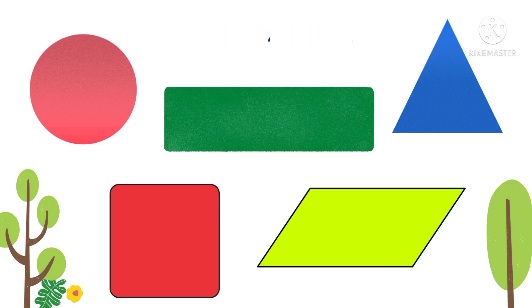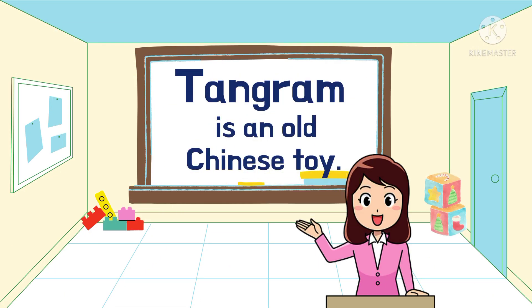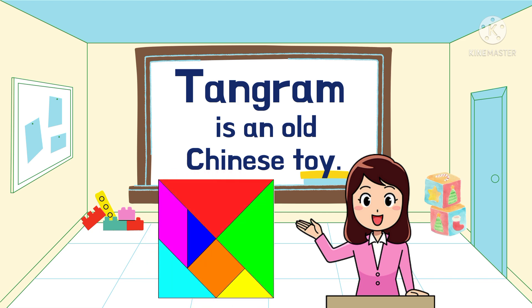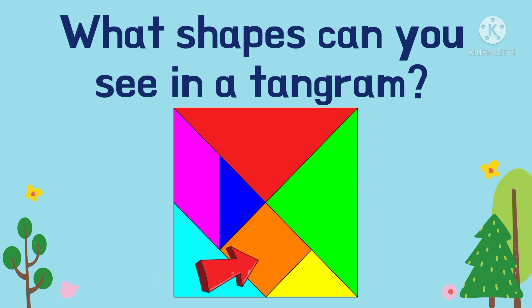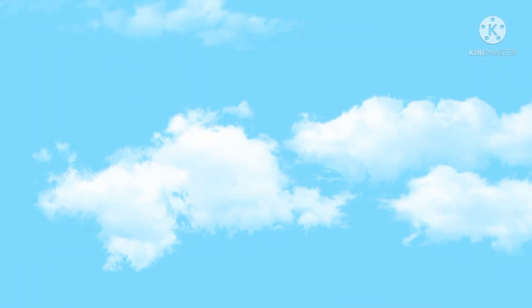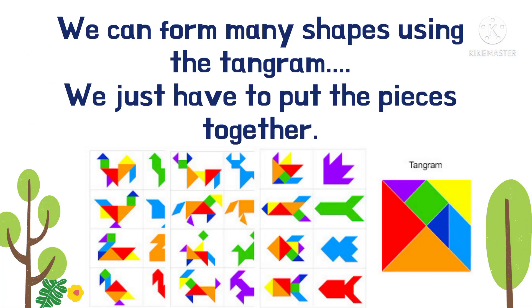Well done, you have learned about five shapes. In this topic too, we will learn about tangram. Tangram is an old Chinese toy. What shapes can you see in a tangram? A triangle, a square, and a parallelogram.